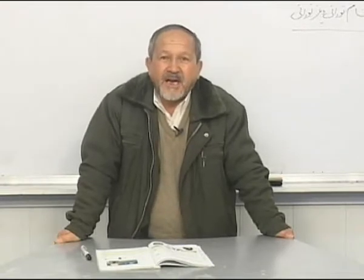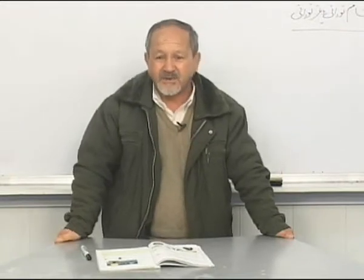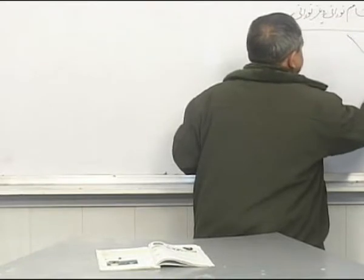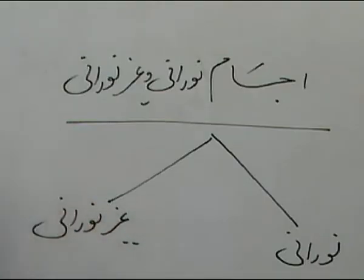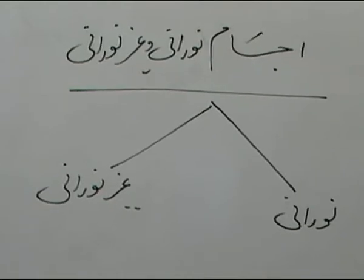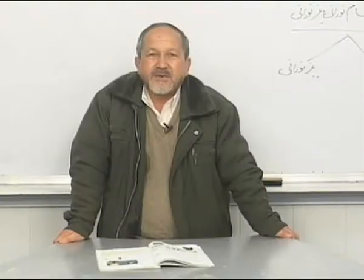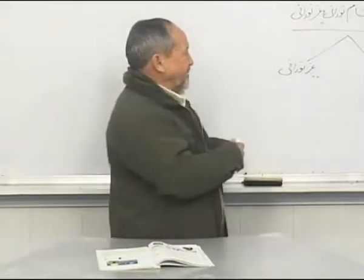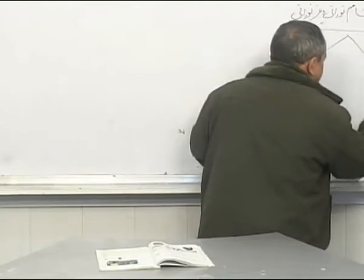اگر از این نگاه بگیریم، تمام اجسامی که در طبیعت وجود دارند به دو دسته تقسیم میشند: یکی اجسام نورانی و دیگری اجسام غیر نورانی. اجسام نورانی را هم میتوانیم به دو قسمت تقسیم کنیم: یکی اجسام نورانی طبیعی و دیگری اجسام نورانی مصنوعی.